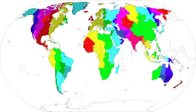UTC plus 3 is an identifier for a time offset from UTC of plus 03. In areas using this time offset, the time is three hours later than Coordinated Universal Time. Following the ISO 8601 standard, a time with this offset would be written as, for example, 2018-12-03T00:33:30+03:00.